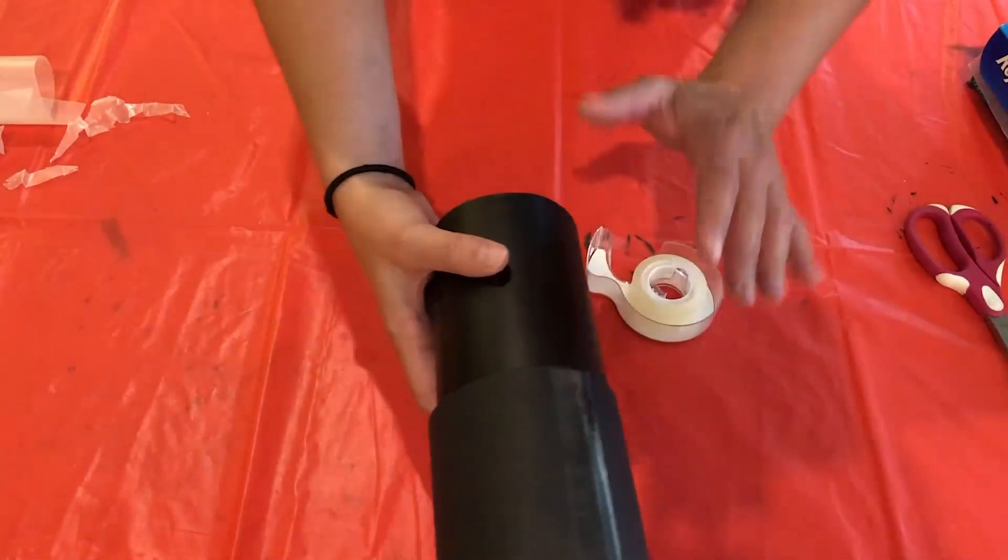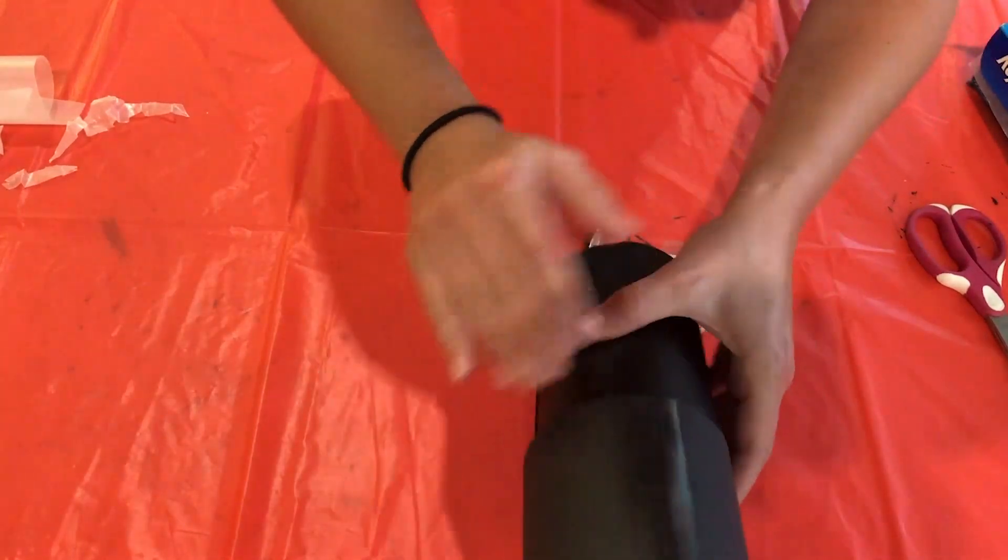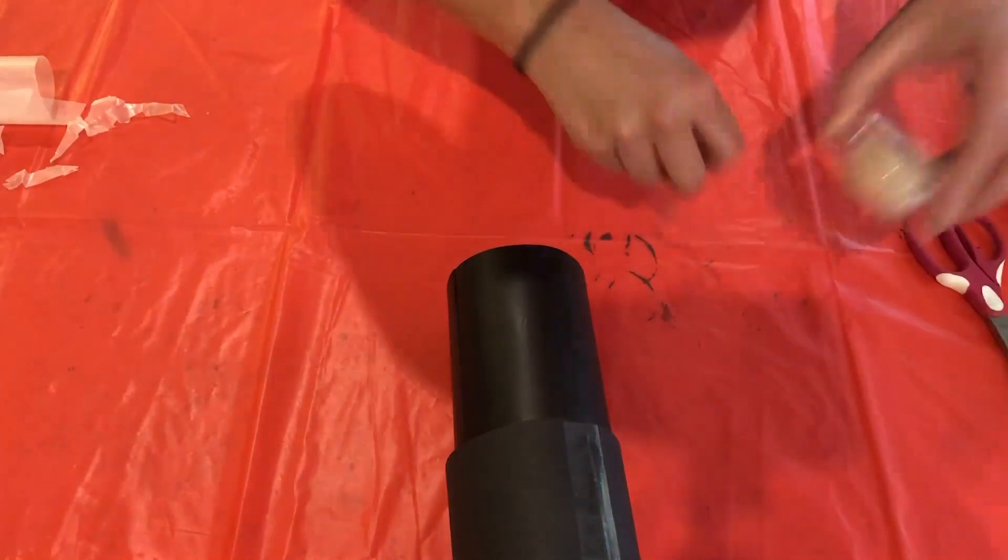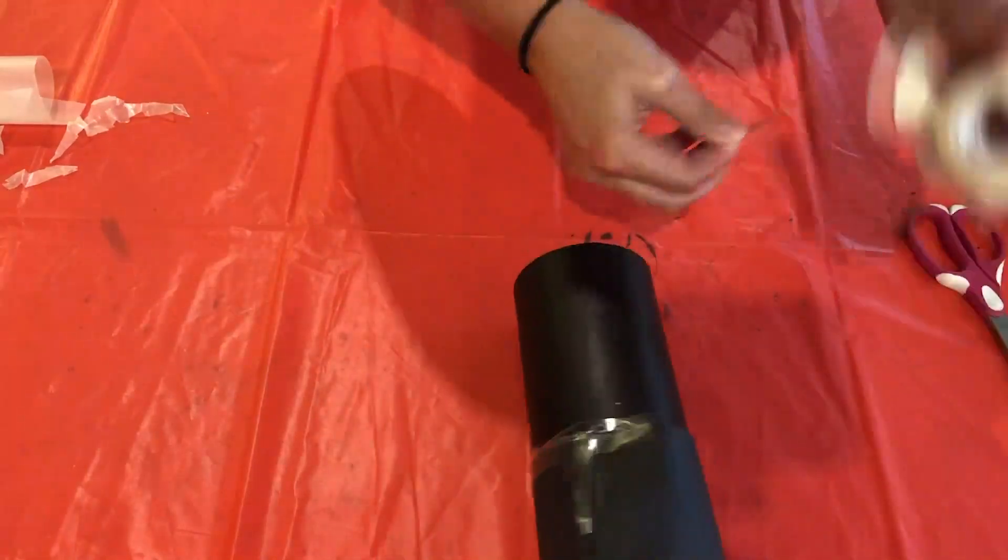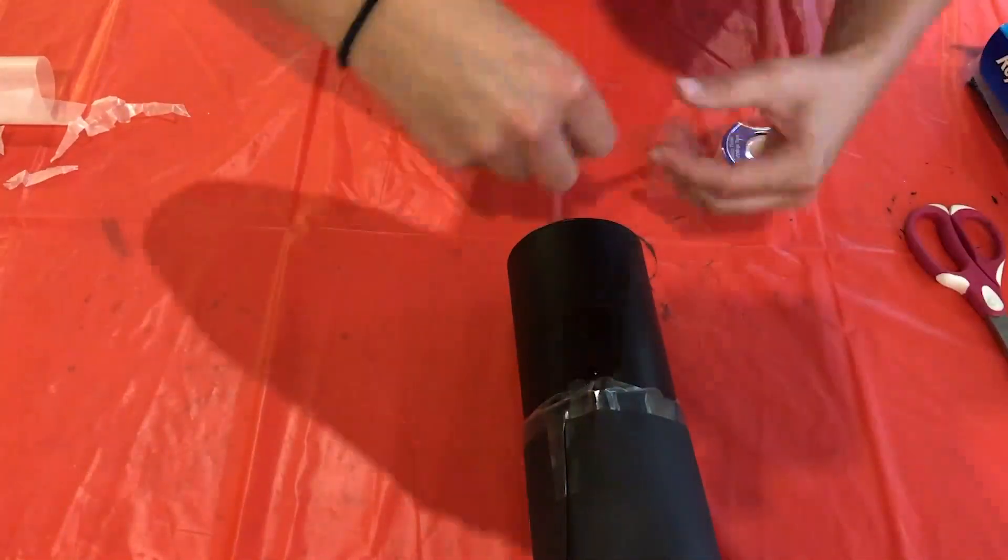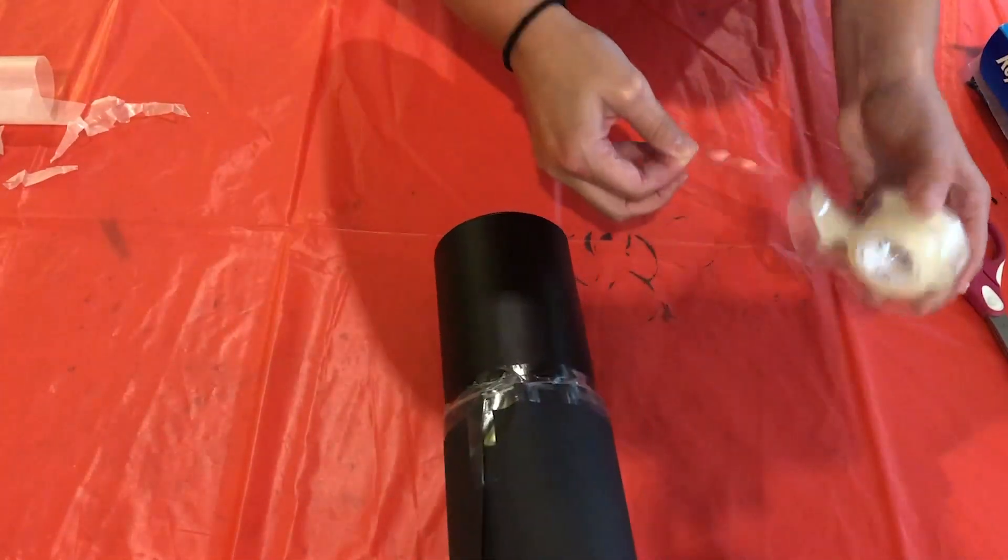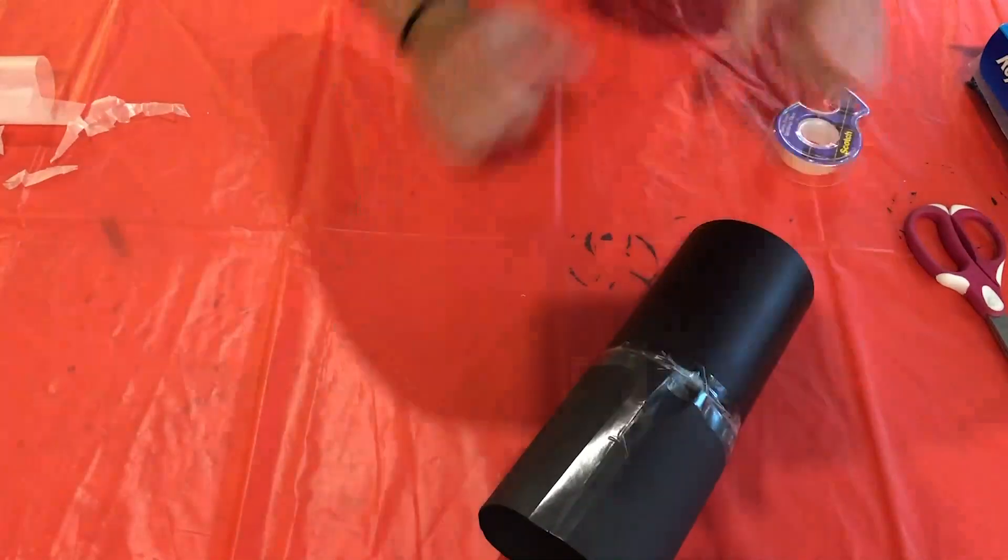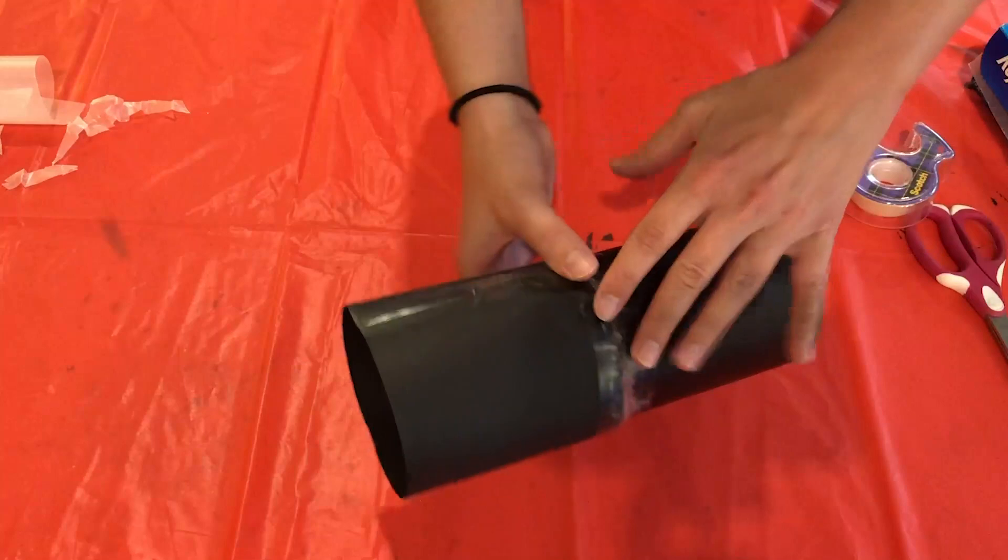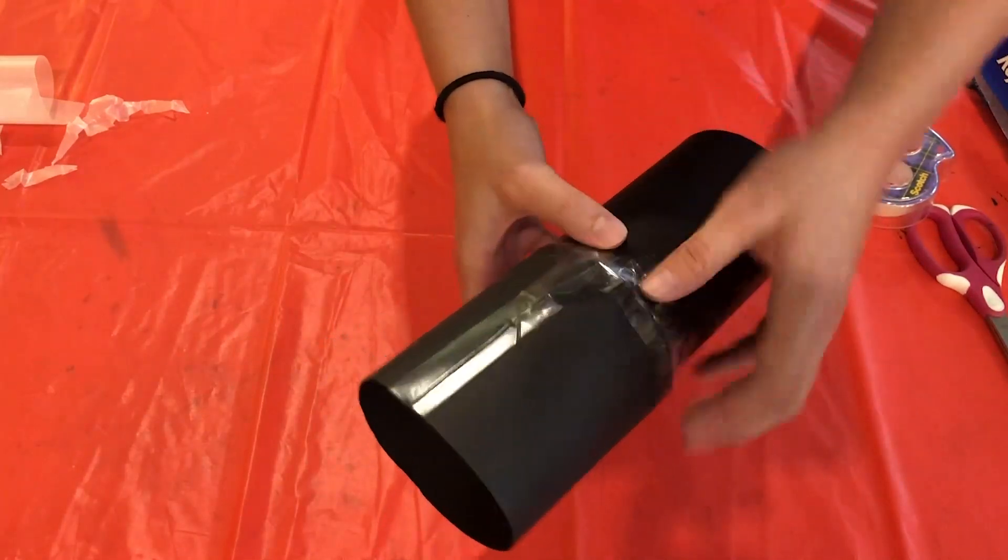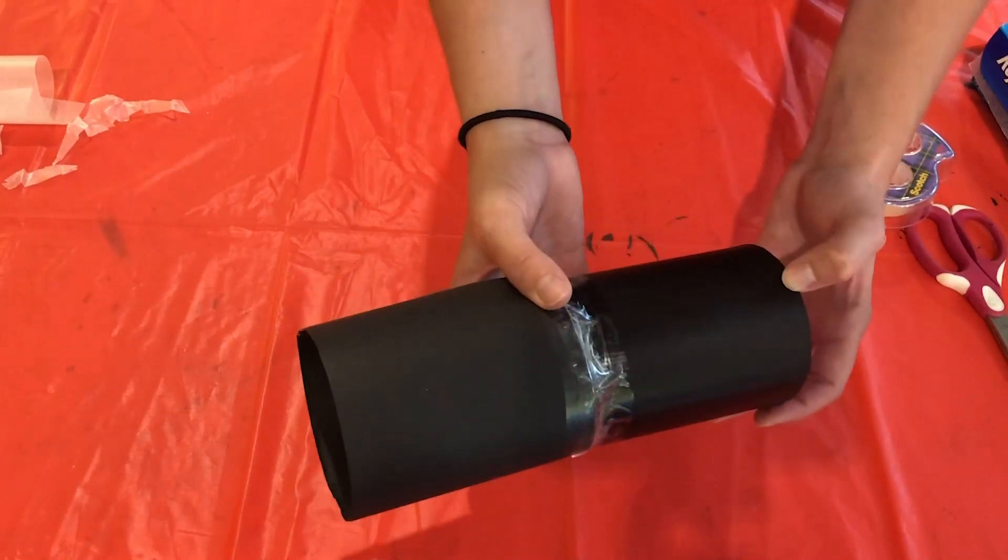Okay, so the next step is we are going to tape the entire thing shut so we don't want any light coming in here whatsoever. Make sure you get along the side too, any paper sticking up. Okay, so now that your camera is all nicely sealed up and there's no light getting in there, if your paper looks a little crazy, that's okay, it'll still work just fine. So let's go ahead and take this outside and see what we can see.